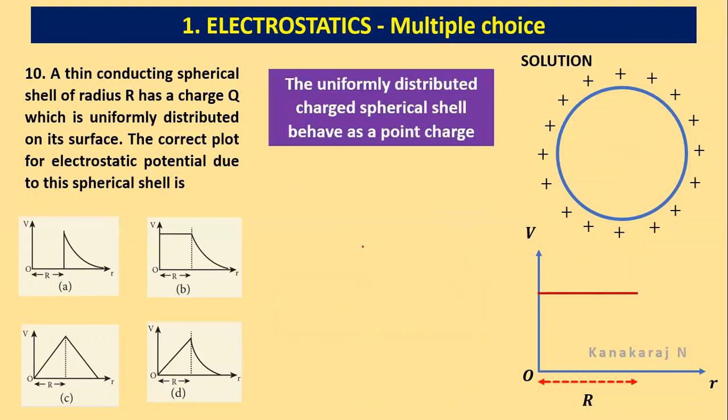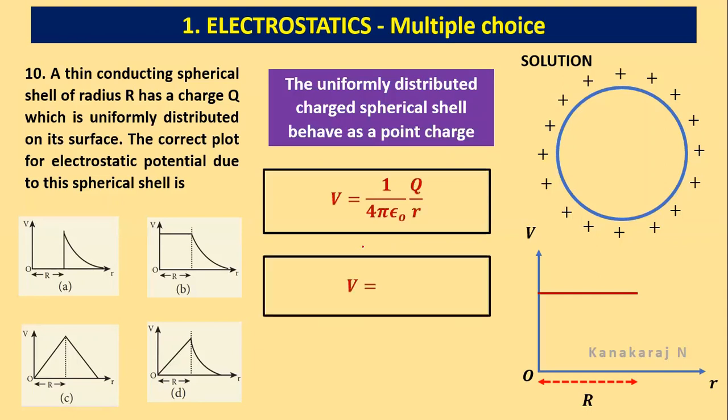Let us go for the next part. The uniformly distributed charge in the spherical shell behaves as a point charge. So we have a formula for it. V equals 1 by 4 pi epsilon_0 Q by r. Let us rearrange this. V equals k times 1 by r.